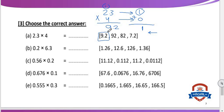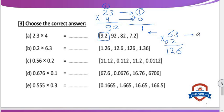Letter B: 0.2 multiply 6.3. Ignore the decimal point — 63 multiply 2. 2×3=6; 2×6=12. So result is 126. In 0.2, decimal point is after 1 digit; in 6.3, decimal point is after 1 digit. 1 plus 1 equals 2. Put decimal point after 2 digits from the right. So the result will be 1.26.